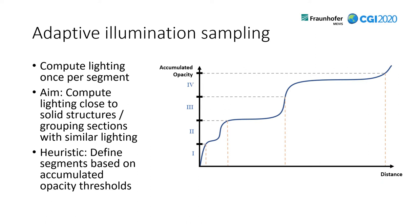Here is a graph of an exemplary ray traveling through the volume, accumulating opacity as it travels. We want to compute the lighting only once per segment, with the aim of computing the lighting closer to solid structures or grouping sections with similar lighting. The underlying assumption is that lighting doesn't change much between multiple samples, so we can group them. The heuristic we decided on is to define segments based on accumulated opacity thresholds — for example, linear threshold values that split the ray into four segments. These segments are likely to start when opacity increases significantly, so we compute the lighting close to solid structures if possible.